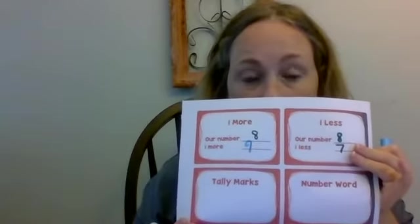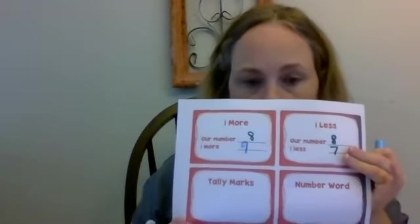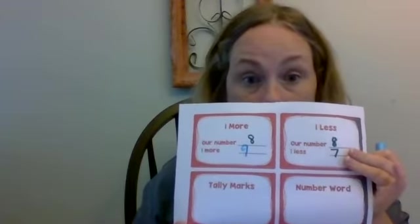Get out your math journal and show your grown-up nine tally marks. I'm going to write mine on my paper. Draw nine tally marks. I've got four, and when I get four, I do that diagonal one — five, six, seven, eight, nine.